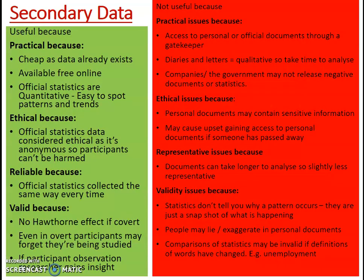Secondary data is considered very practical because the data already exists — it's information created by participants or official bodies, so it's really cheap. Quite a lot of official secondary data is available for free online, particularly official statistics such as examination results, league tables, grades by gender, or crime statistics. Official statistics are quantitative, so they're really easy to spot patterns and trends.